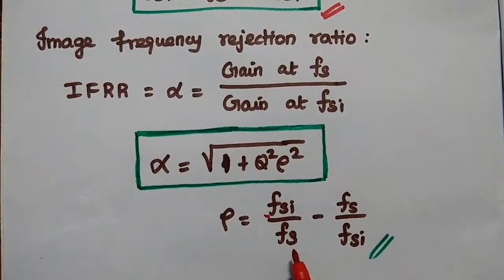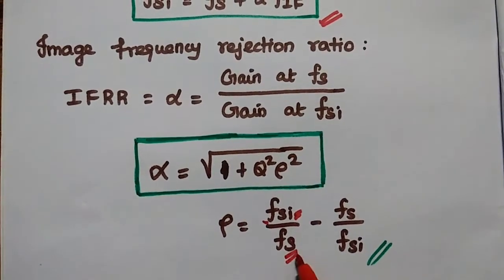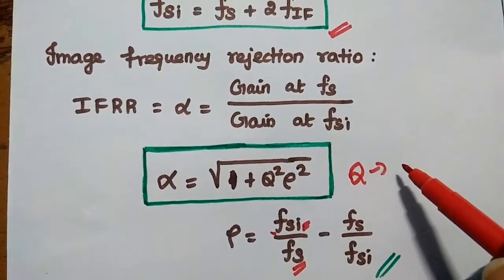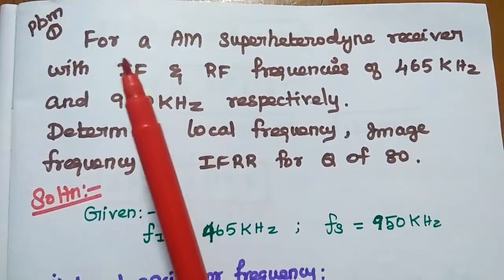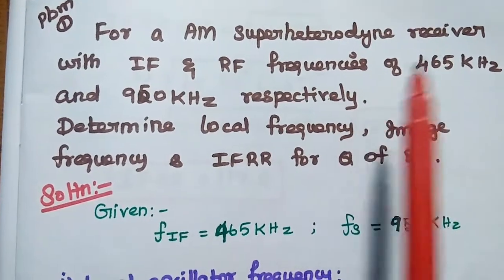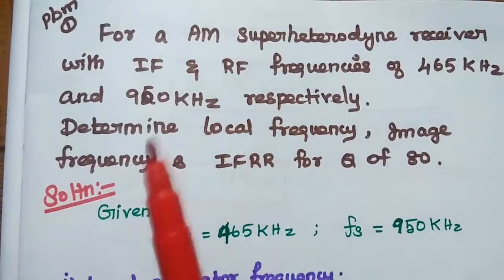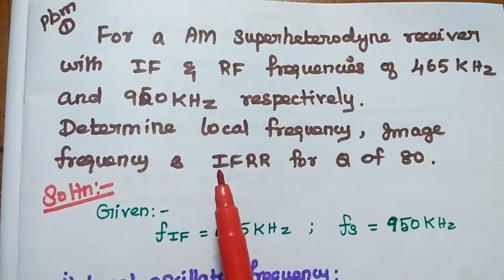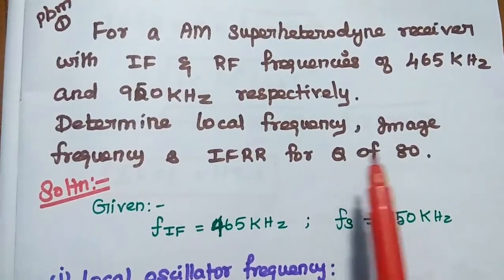Here FSI means image signal frequency and FS means signal frequency. Q is the quality factor of the RF section. The problem: for an AM superheterodyne receiver with IF and RF frequencies of 465 kHz and 950 kHz respectively, determine the local oscillator frequency, image frequency, and IFRR, given that the quality factor is 80.